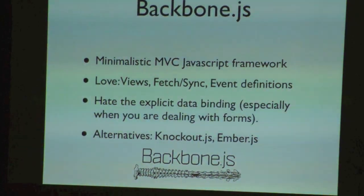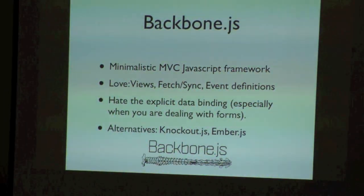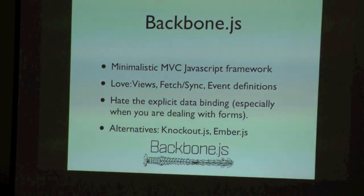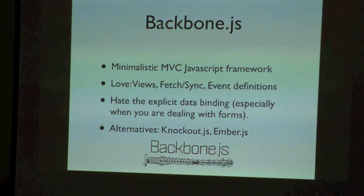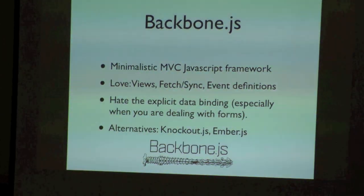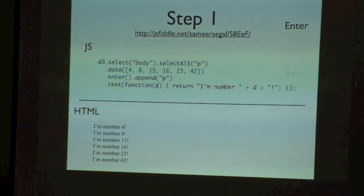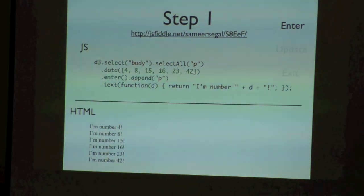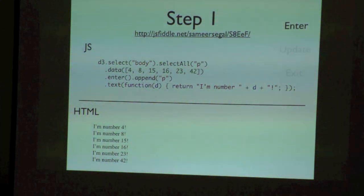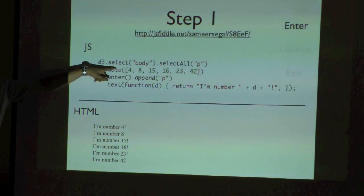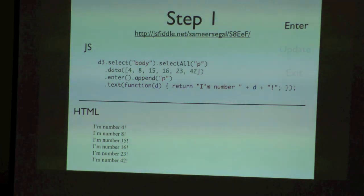Just a quick background about Backbone — most of you know Backbone is a minimalistic MVC JavaScript framework. What I really like about Backbone is its definition of views, how you can fetch, sync data, and events. You can specify if you want your data to come from CouchDB or a particular place. What I don't like is that something like Knockout presents actual data binding, which is missing in Backbone — but Backbone is a lot more powerful. Anyway, D3 has a very jQuery-like syntax where you start by specifying a selector.